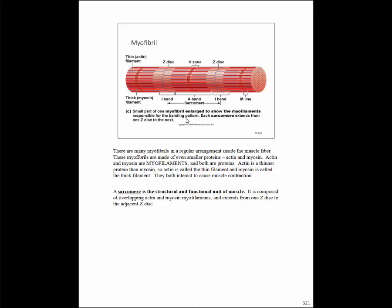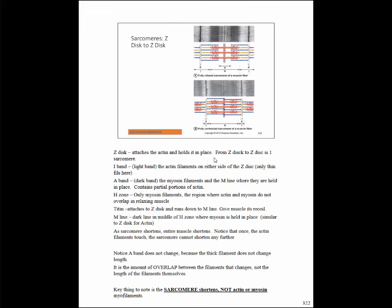Looking at the myofibril, the sarcomere runs from one Z-disc to the next Z-disc. The H-zone is the region where we only find myosin — the actin does not touch in the H-zone. The H-zone does not include the actin. I have that bolded and underlined — that's an important term that might appear on a test.